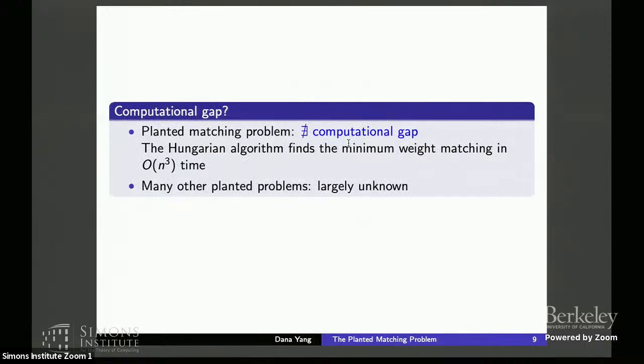Finally, I would like to just make a short comment about the computational gaps. So for this particular problem, there is actually no computational gap. Because we know that the sharp threshold is obtained by the minimum weight matching. It can be found via the Hungarian algorithm in polynomial time. However, this is not true for a lot of the other planted problems listed. And for a lot of those problems, there are conjectured computational gaps. And it is still largely unknown how to show those conjectured computational gaps. And that's what I'm here to learn. Thank you.